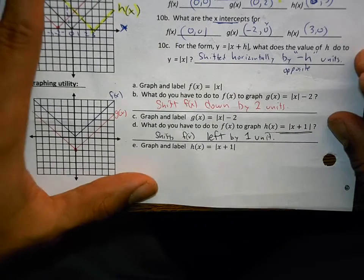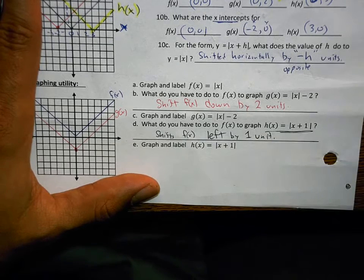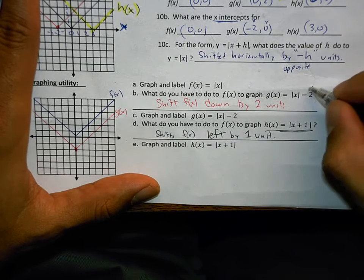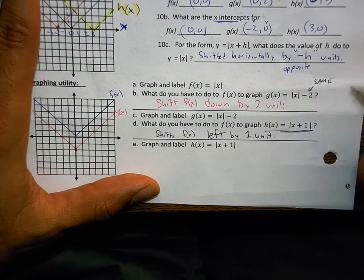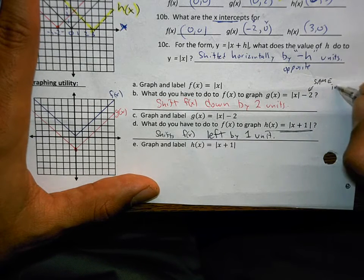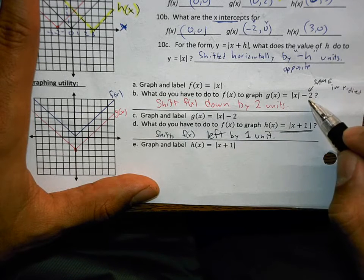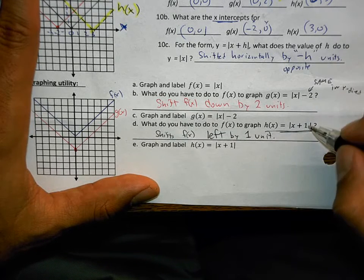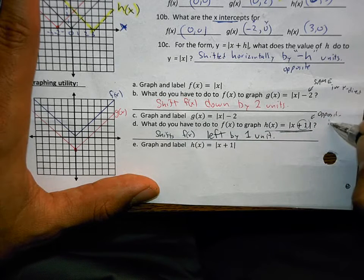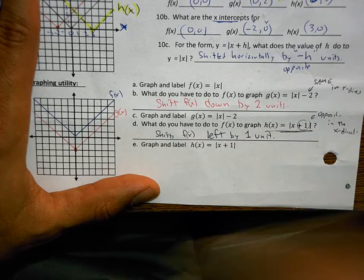It's going to shift it left by 1 unit. It's going to shift it right by 1 unit. The big idea. Tommy. The big idea is this. If it's outside, it's the same in the y direction. Negative 2 down. It's the same. If it's inside, it's the opposite in the x direction.